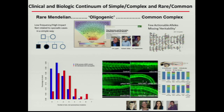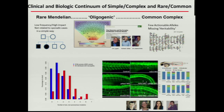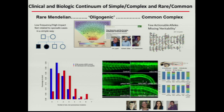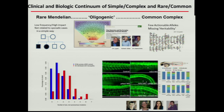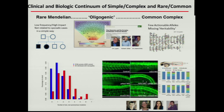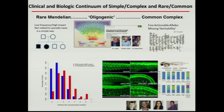We all come to the podium with biases, so the first couple of slides are really to let you know my biases about what's happening in contemporary human genetics. One is that the habit we all have of putting disease into two bins is a good administrative and organizational tool, but it really does not reflect the real science. There's a continuum between rare Mendelian disease and common complex diseases.